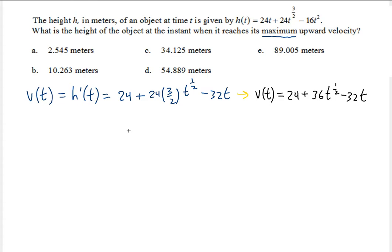Now we need to take the derivative one more time because we need to find the maximum upward velocity. Taking the derivative tells us where the direction of the velocity changes, and that's where we find the maximum upward velocity. So taking the derivative of this gives us the acceleration function — essentially the second derivative of the height, or the first derivative of the velocity.